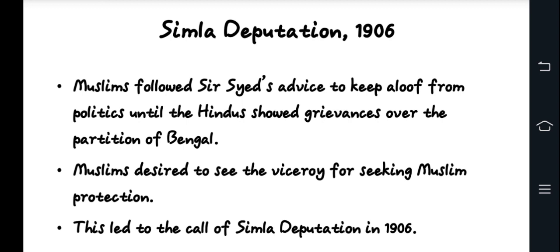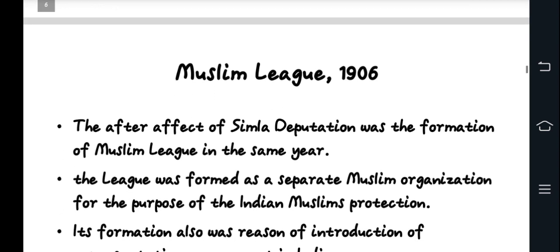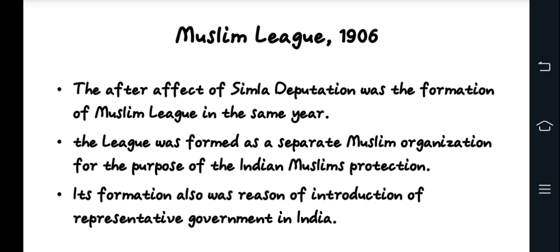The Shimla Deputation in 1906 followed the partition and was led by Muslim leaders who sought to protect Muslim interests and demand separate political representation. In 1906, a delegation of Muslim leaders met at Shimla, which was the first significant organized political activity of Indian Muslims. This was followed by the formation of the All India Muslim League in December 1906 in Dhaka.